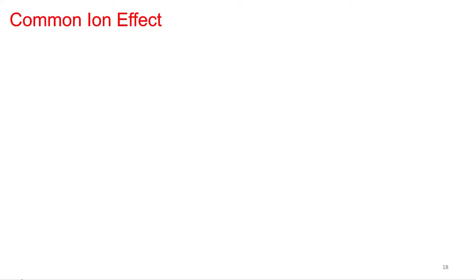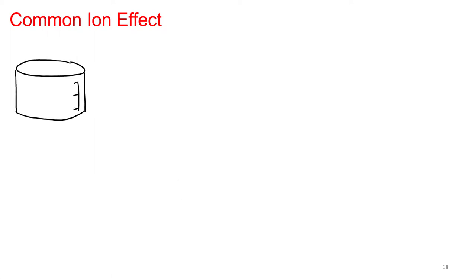Let's draw a picture of a beaker. We talked about silver chloride initially, so let's do some silver chloride. We throw it in — most of it is going to be solid on the bottom, with a little bit of silver and chloride ions in solution.